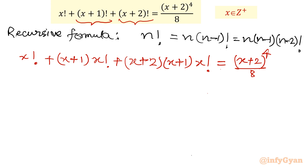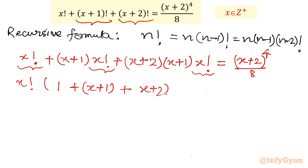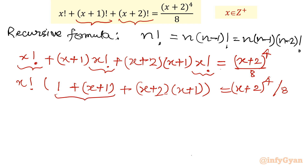Now you can see x factorial appears in all three terms. We take x factorial common. What's left inside the bracket is: 1 plus (x+1) plus (x+2)(x+1). Adding the first two terms gives (x+2), so we write x factorial times [(x+2) plus (x+2)(x+1)] equals (x+2)^4 divided by 8.